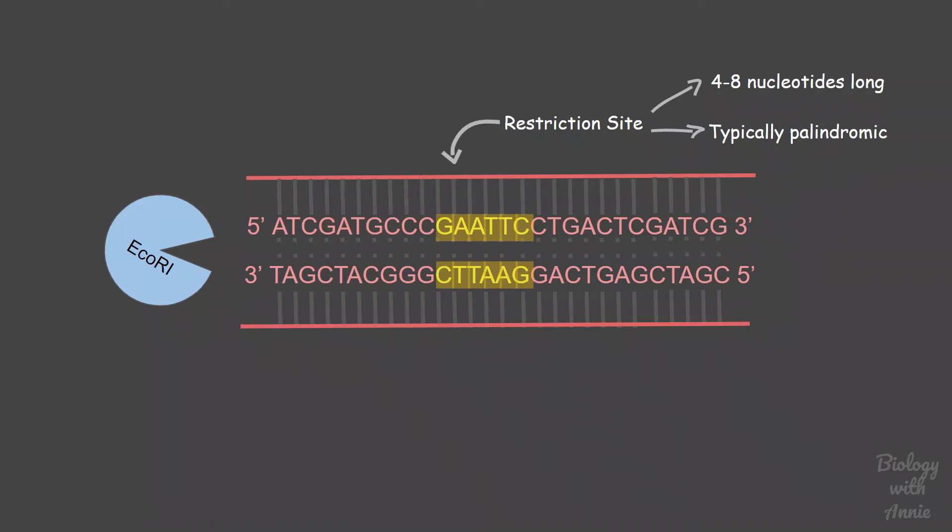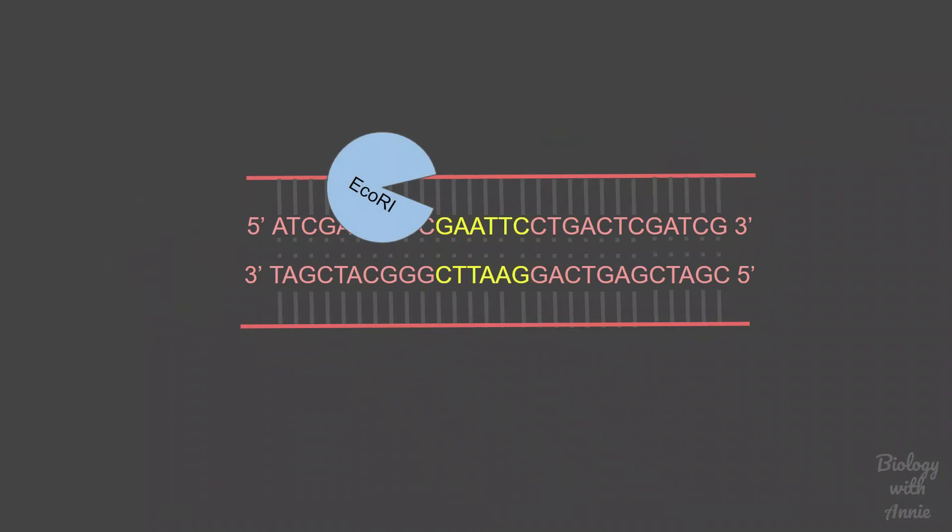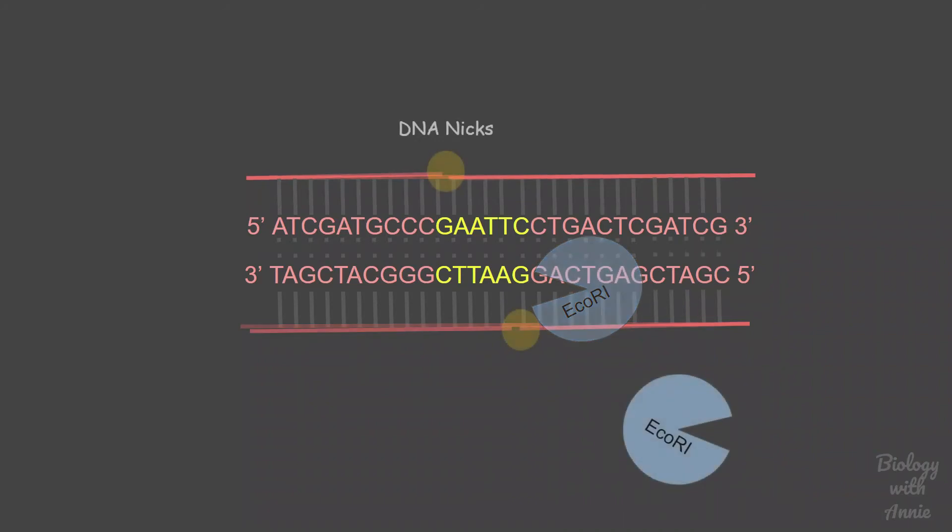This ensures that a cut has been made in the sugar phosphate backbone on both the top and the bottom strand. This cut creates a discontinuity in the DNA and is also known as a DNA nick.